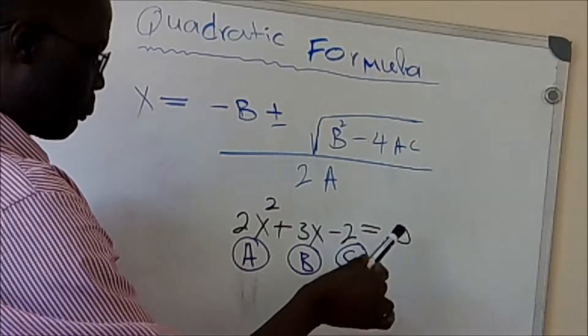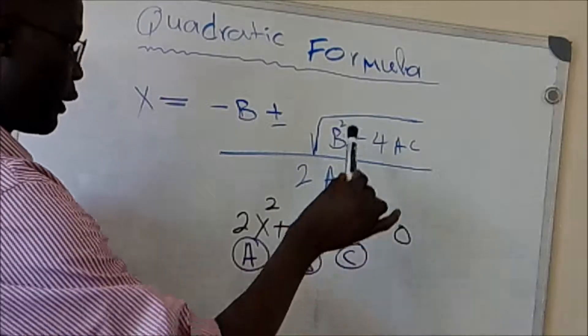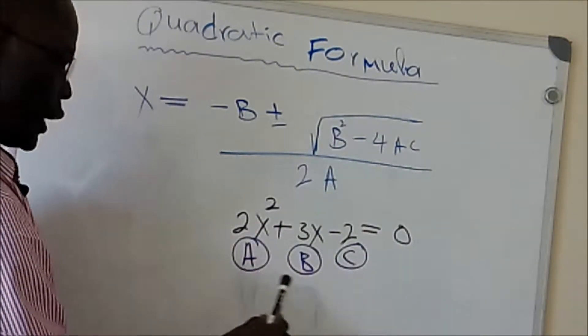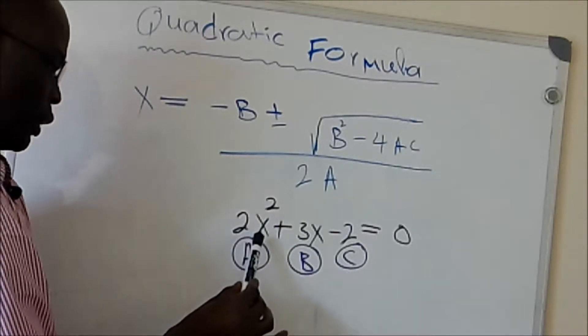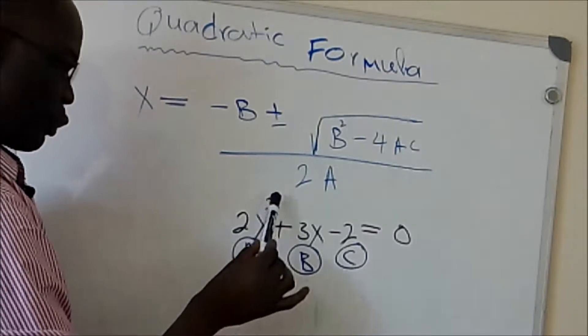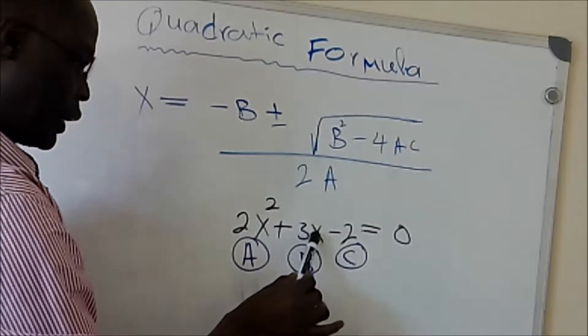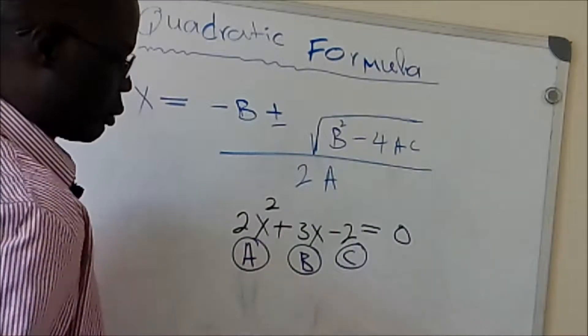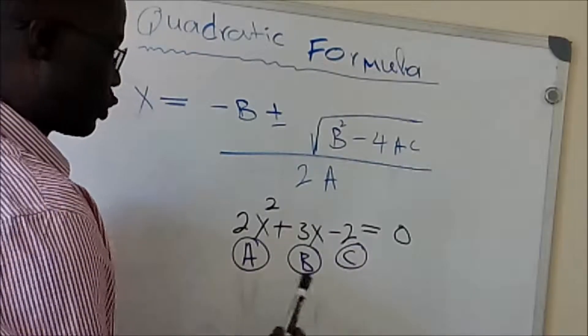The values you're going to plug in for A, B, and C come from this equation: 2x² + 3x - 2 = 0. This is an equation, so it equals zero.